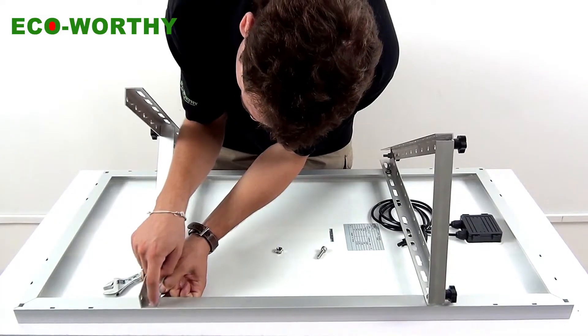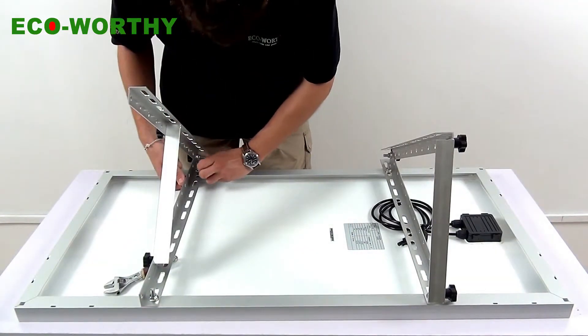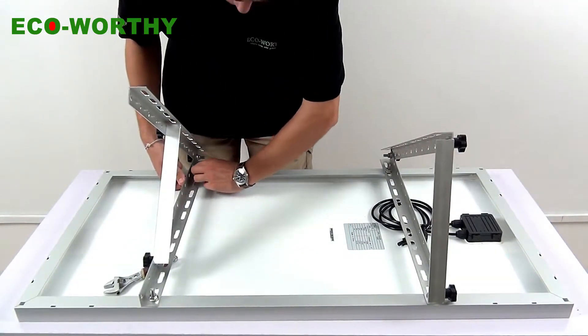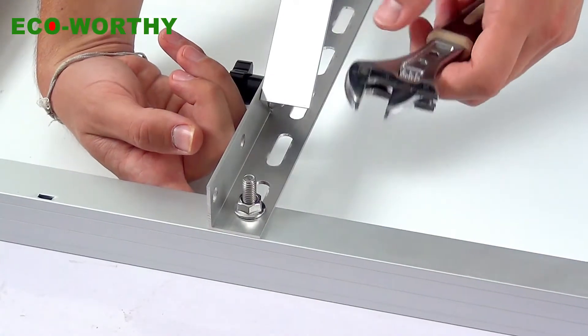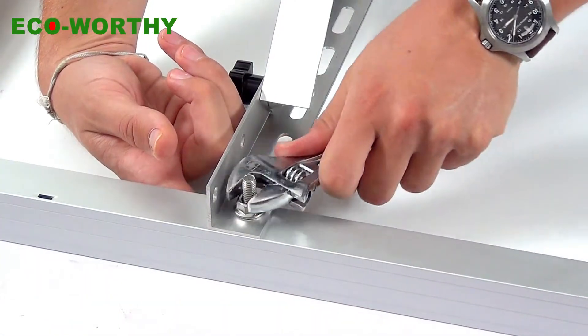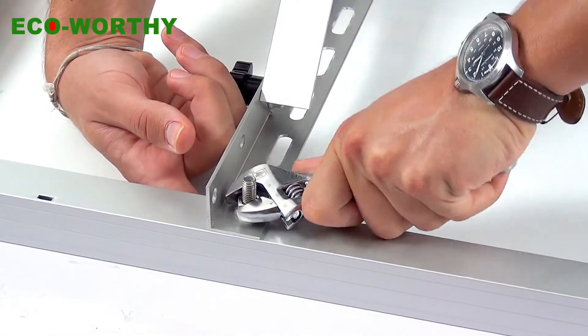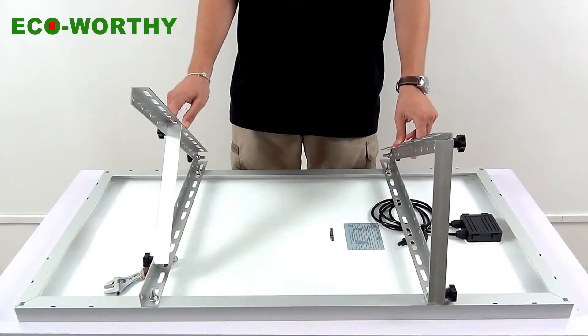Then we do the same for the other set of rails. It's the same process. We use this spanner now to tighten up the nuts here. Now we're done.